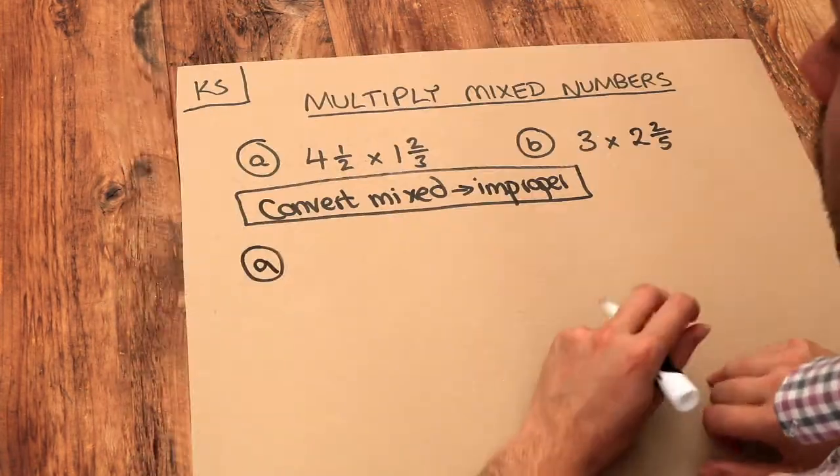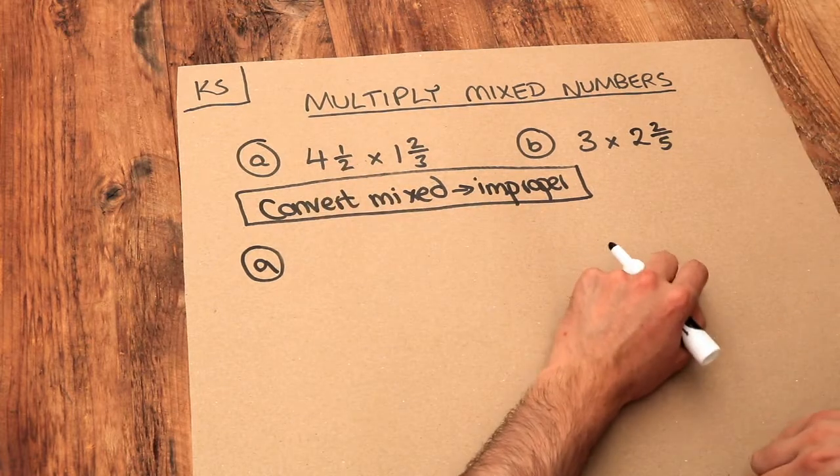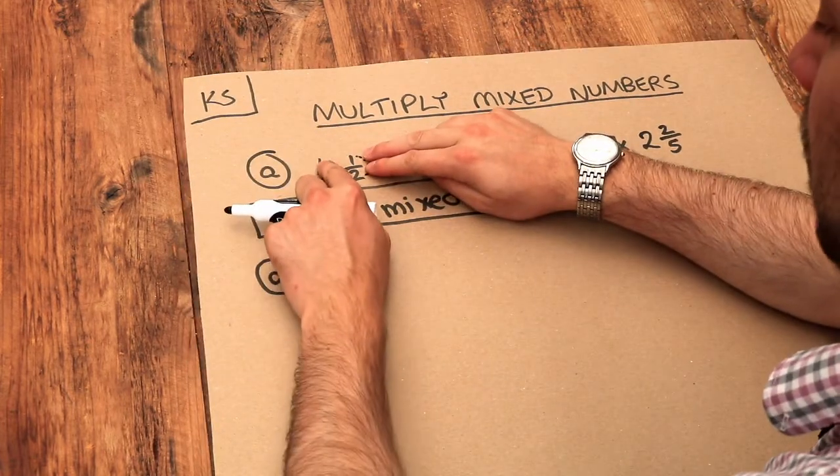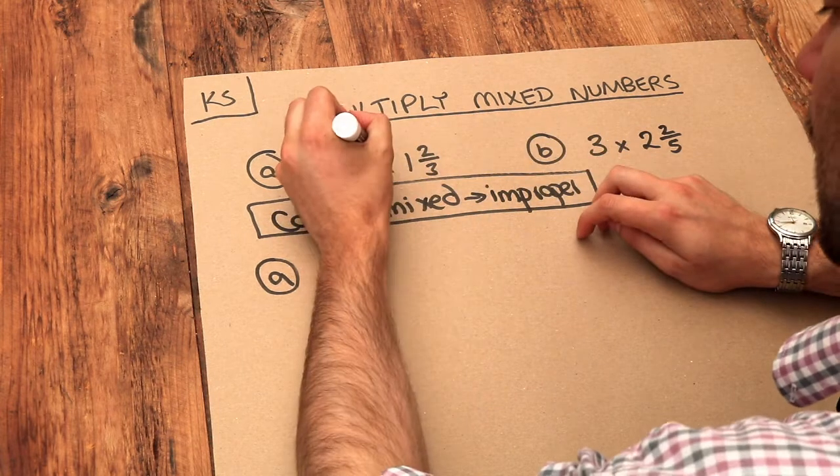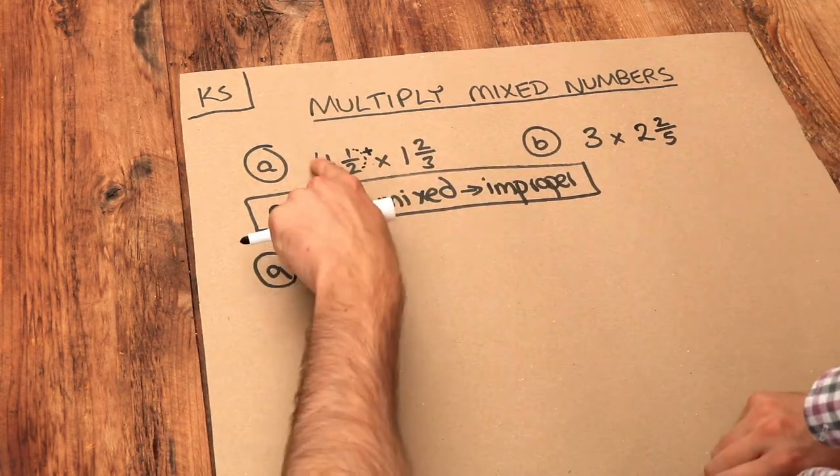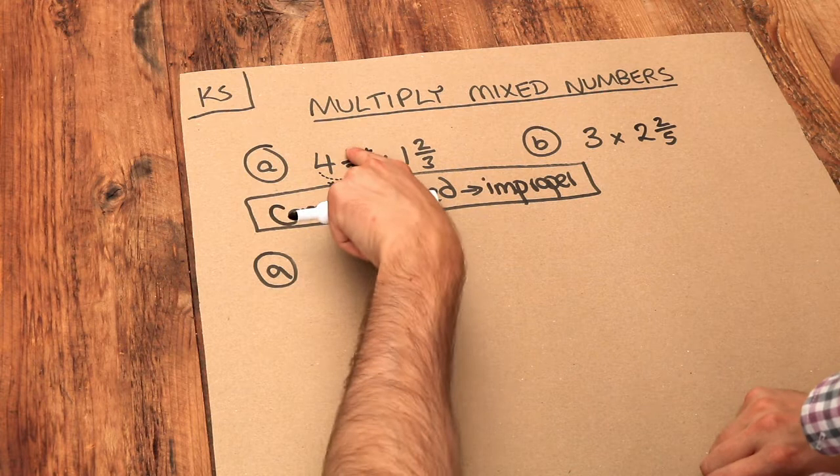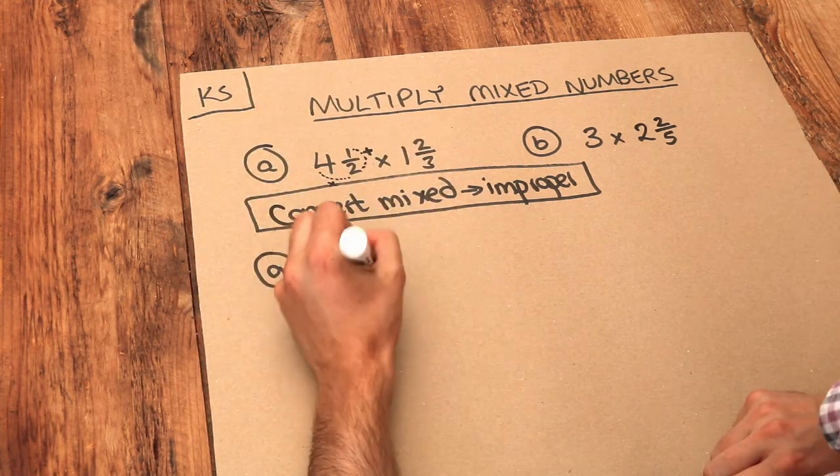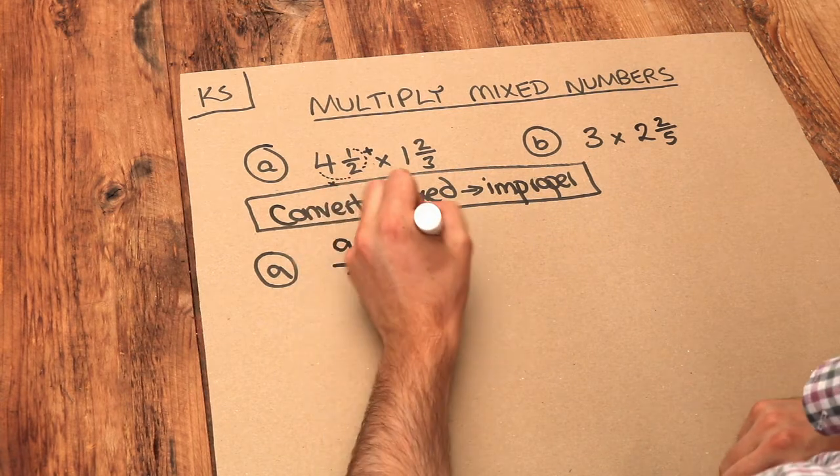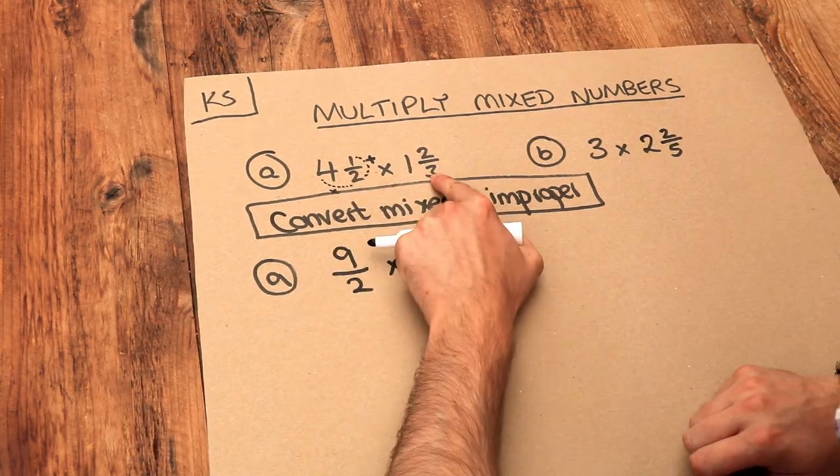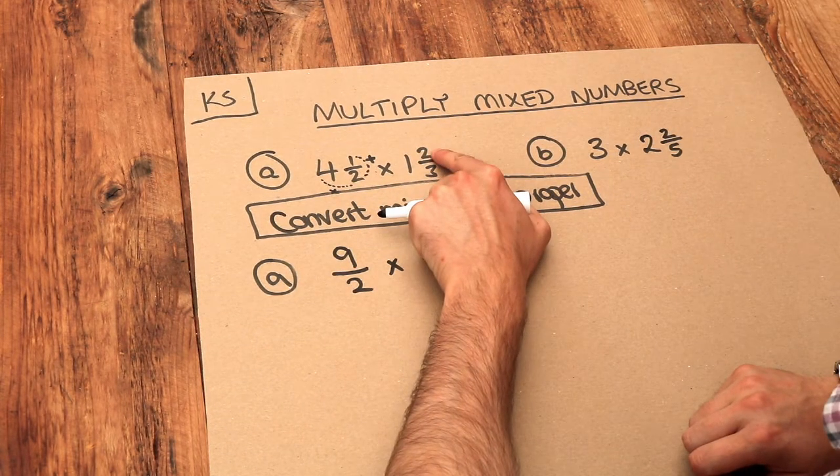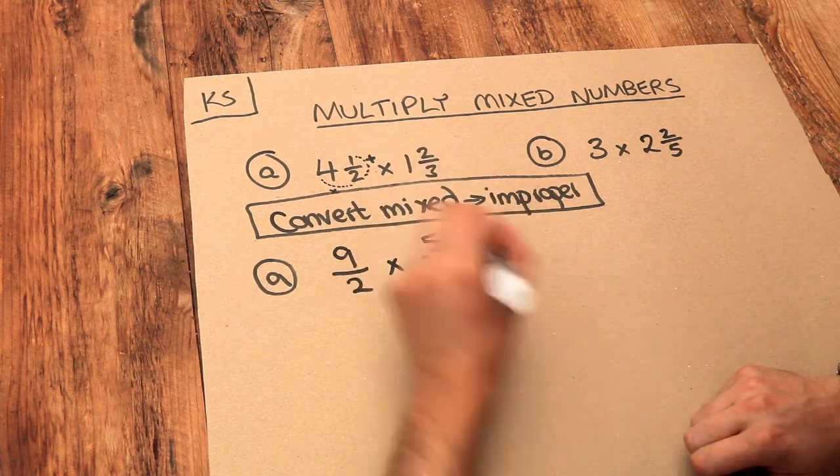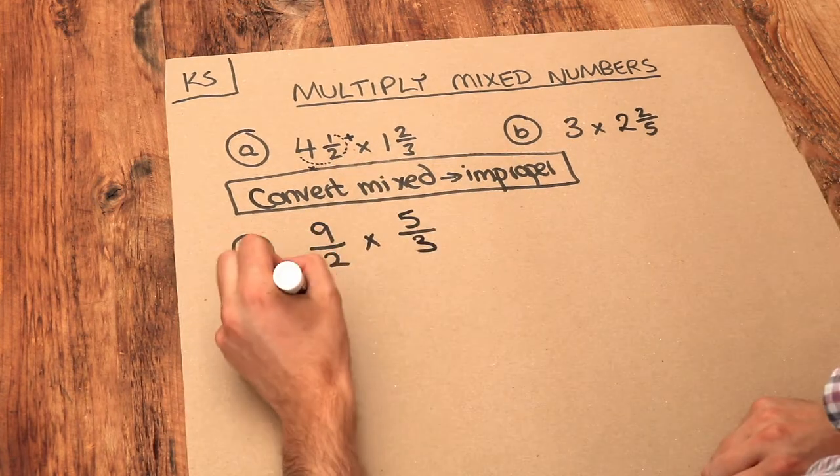So four and a half, how do we convert that to an improper fraction? We multiply the whole part by the denominator and then add on the numerator. Four times two is eight, plus one is nine, so it's nine over two. Then we're multiplying by, let's do the same thing here. One times three is three, plus two is five, so it's five over three.